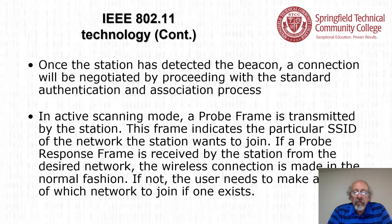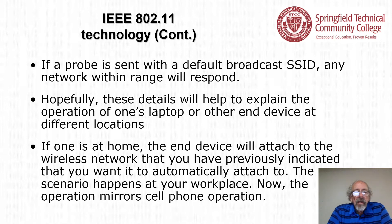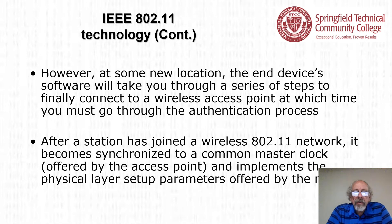If no response is received, the user needs to make a choice of which network to join. If a probe is sent with a default broadcast SSID, any network within range will respond. At home or at a workplace, the end device will attach to the wireless network previously indicated for automatic attachment — mirroring cell phone operation. At some new location, the end device's software will take you through steps to connect to a wireless access point, at which time you must go through the authentication process. After joining, the station synchronizes to a common master clock offered by the access point.